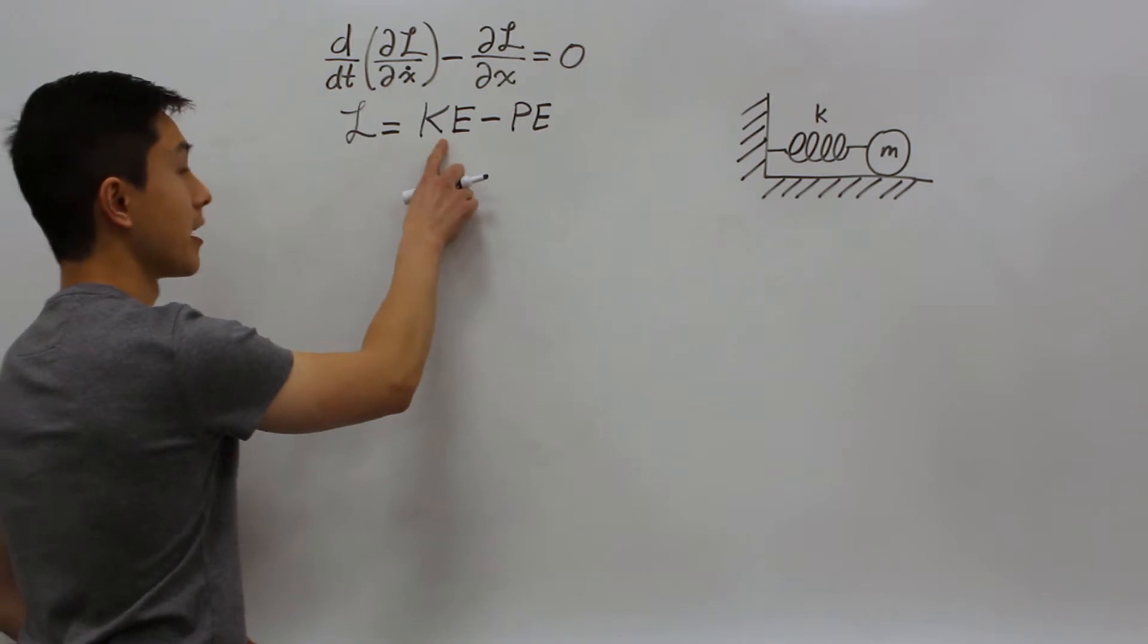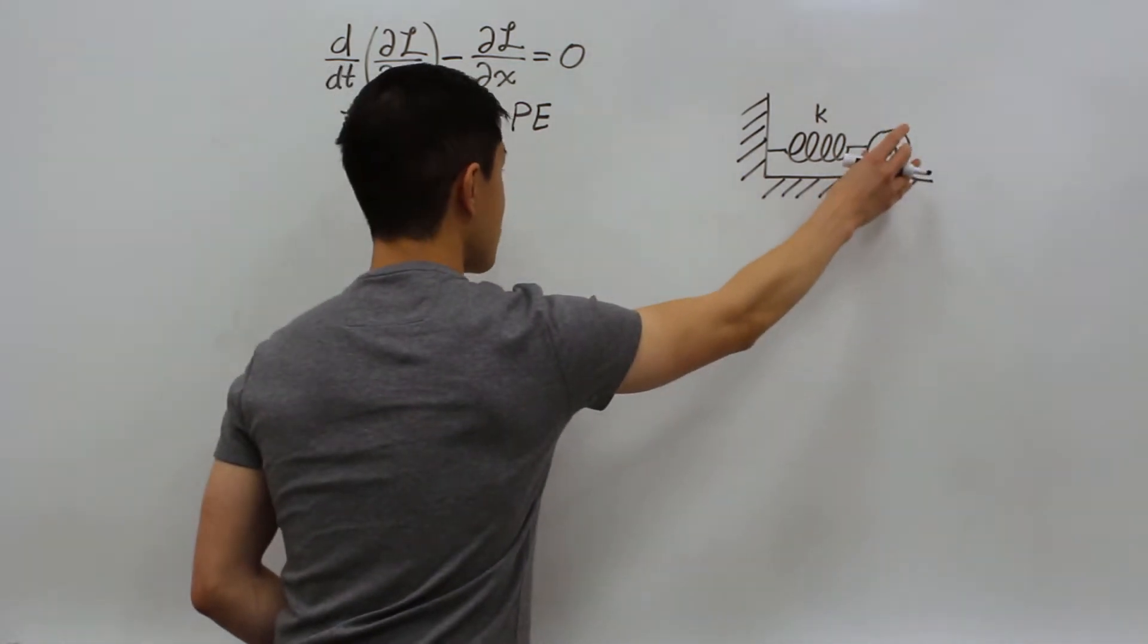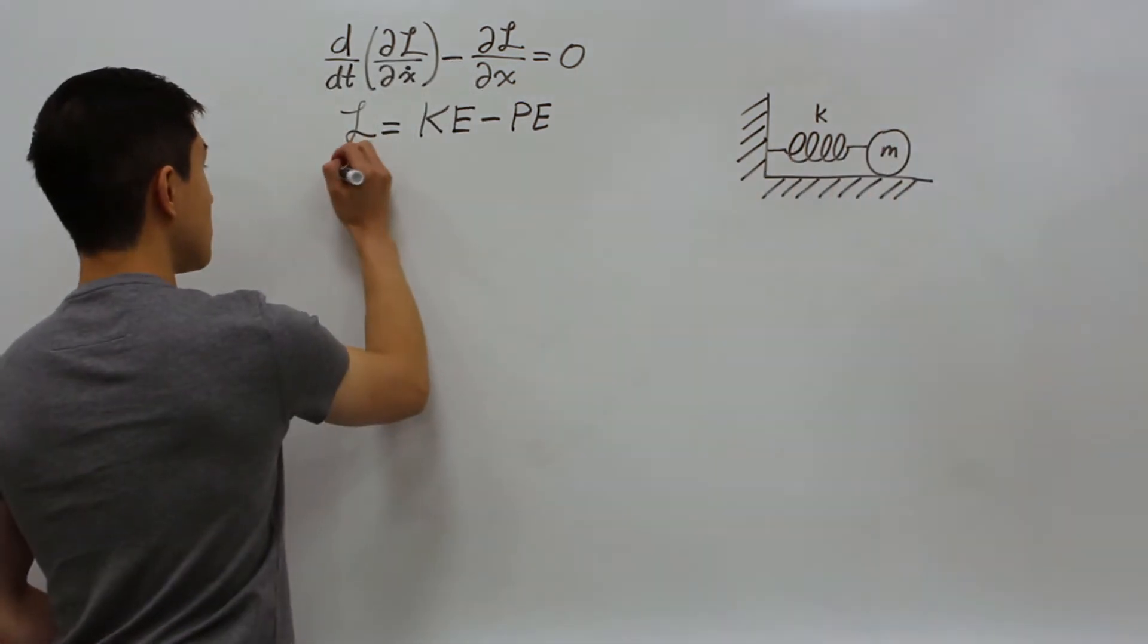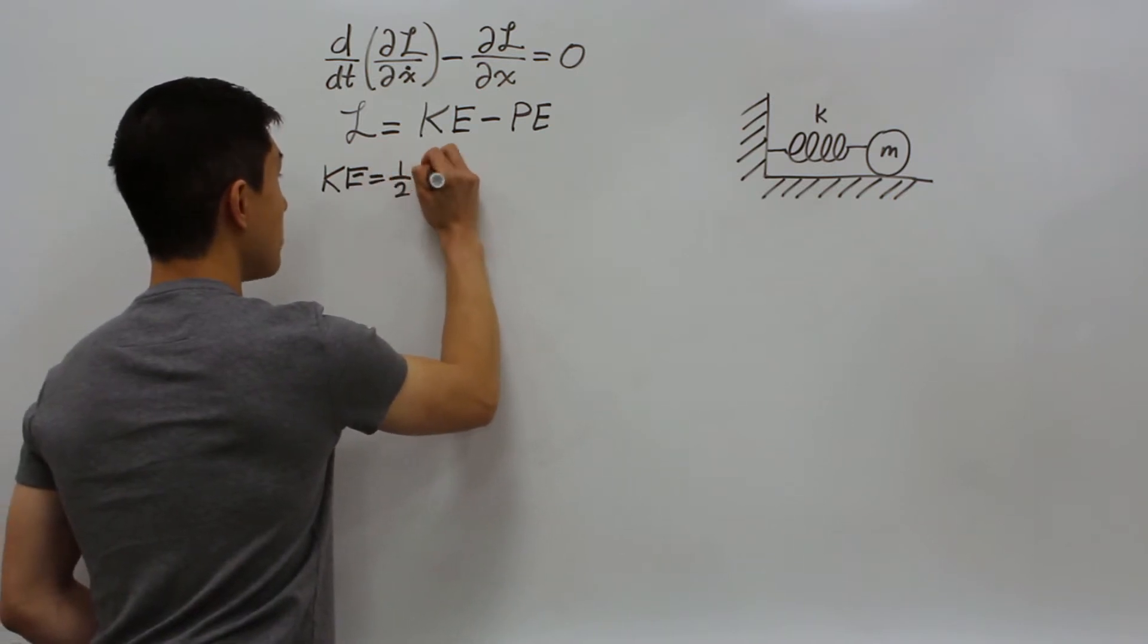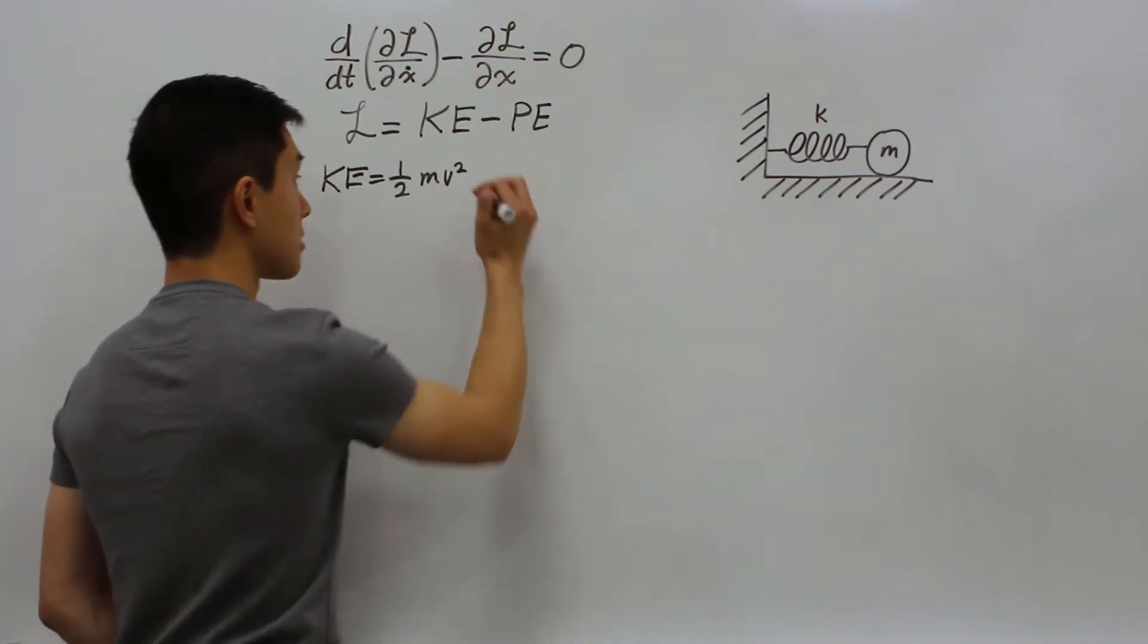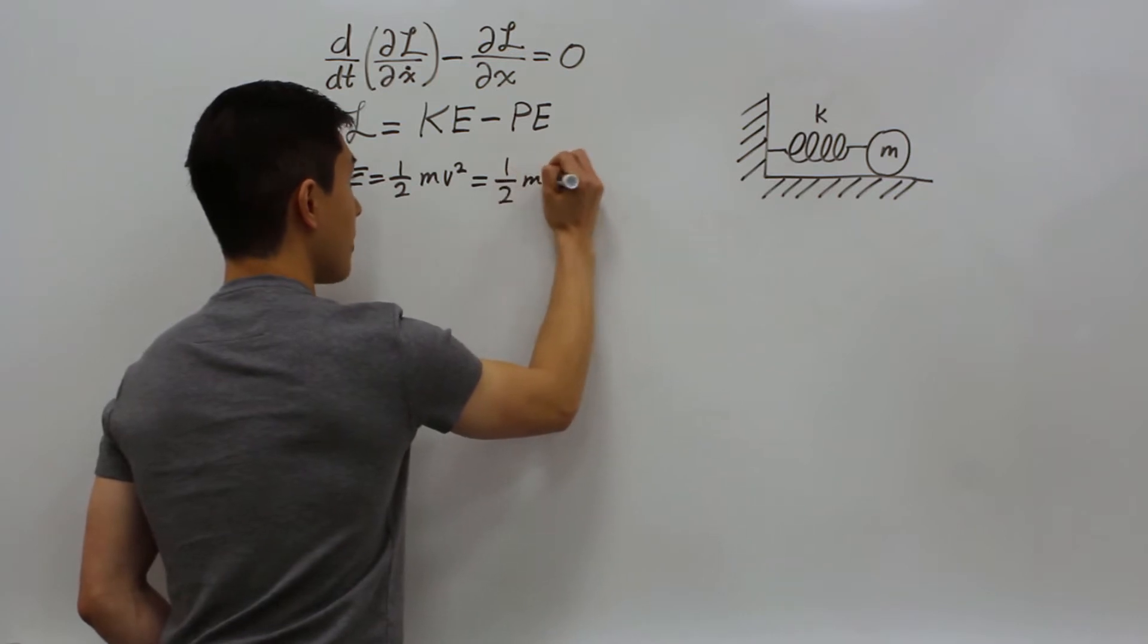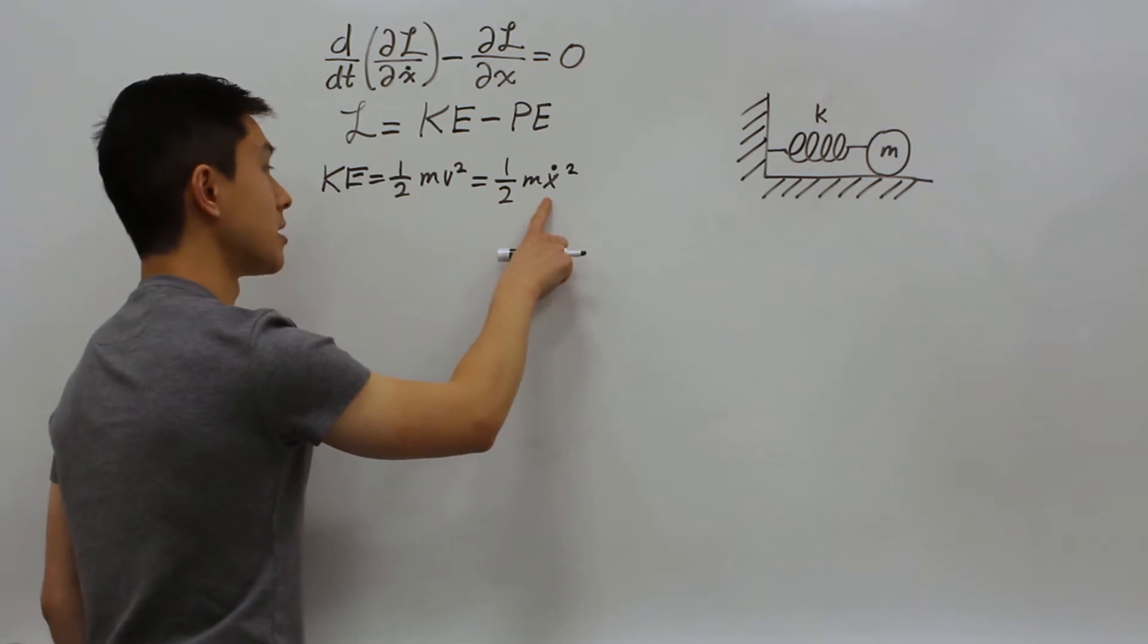Let's first try finding the kinetic energy of our system. Our kinetic energy only consists of this mass translating back and forth in the x direction. So the kinetic energy is going to be 1 half mv squared. We're going to say our generalized coordinate for our Lagrange equation is going to be x. So we're going to convert this v into 1 half mx dot squared, as the first derivative of x is going to be the velocity.